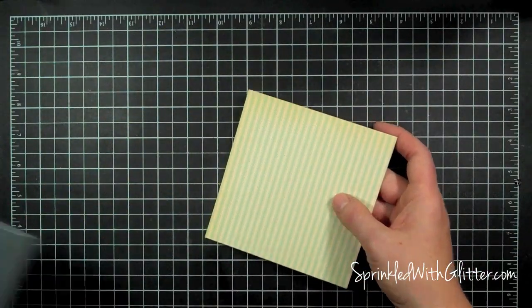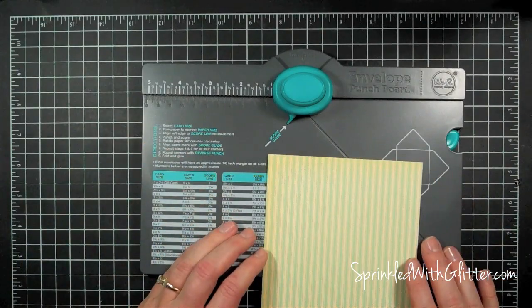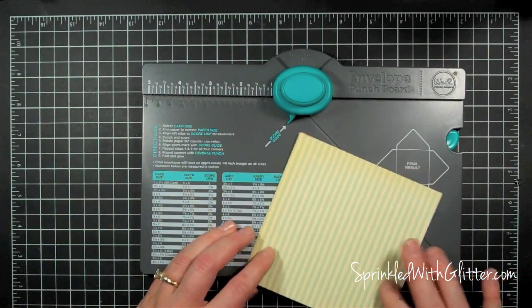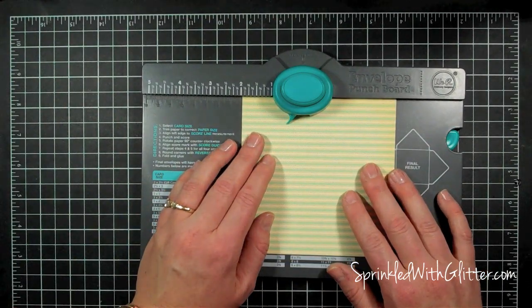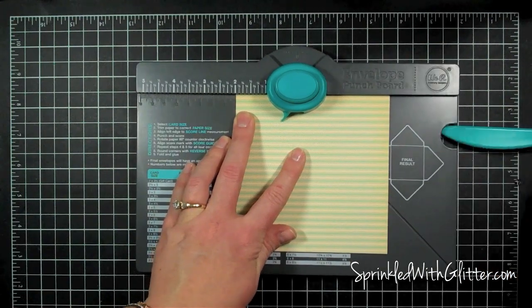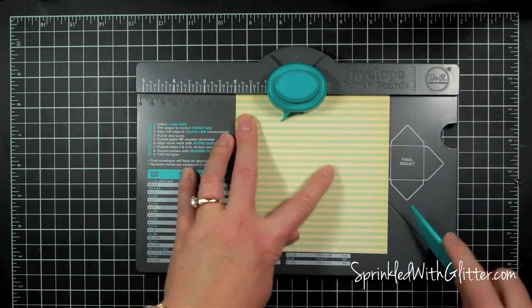And then I'll bring my punch board back in. And if you'll recall, I am to start with a two inch score line. So I'm going to go ahead and put my paper right on here, line it up with the two inch score line. I have my scoring tool right here that's kept in the score board.